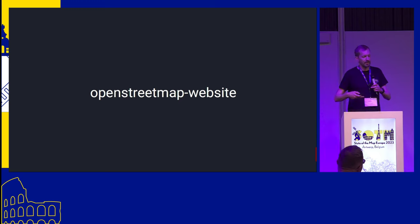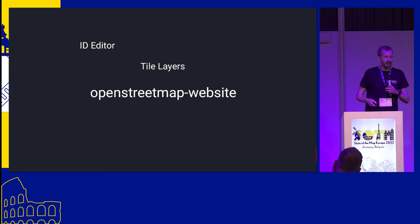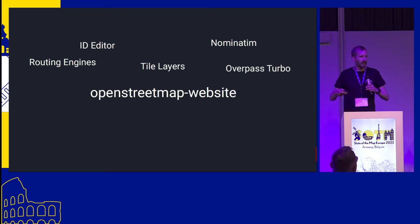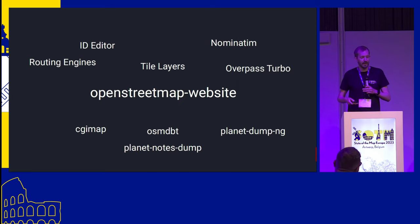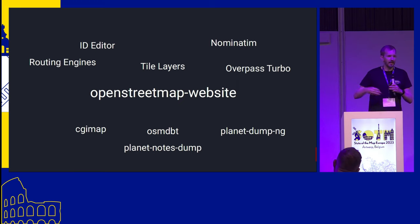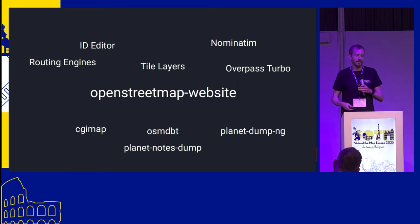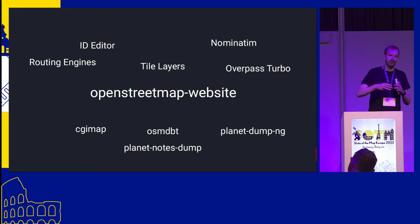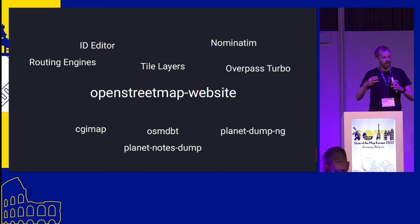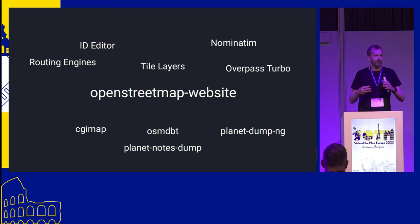Although we have the OpenStreetMap website project at the core, there are user-facing external projects which are integrated, and also some behind-the-scenes projects like CGImap, which accelerates some of the API calls, and various planet dump and data replication scripts which talk directly to the database to publish the data you see on planet.openstreetmap.org. These are all independently managed, but the shape of the OpenStreetMap website project is determined in cooperation with all these external projects.